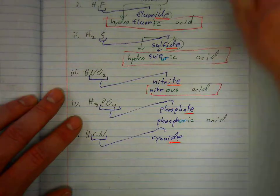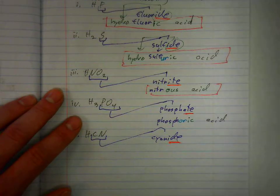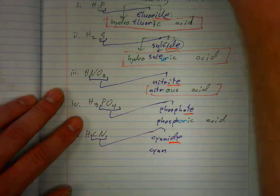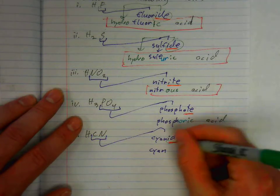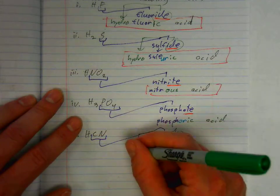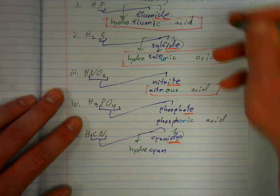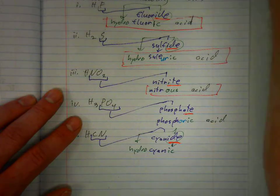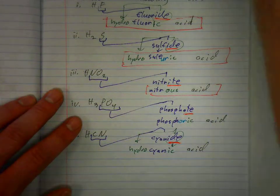So it's hydro-stem-ic acid. We have the stem, the prefix, and the suffix, followed by acid. Hydrocyanic acid.